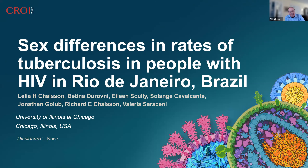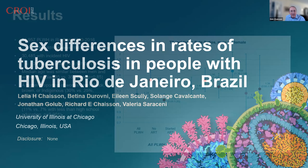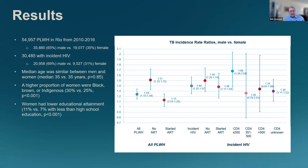My daughter Lillia, who was a PhD student here at the time, was interested in whether sex differences might extend to tuberculosis in people with HIV. With colleagues in Brazil she did this analysis, presented at CROI a month ago. She looked at HIV cases in Rio de Janeiro over a six-year period — about 55,000 cases, roughly 36,000 men and 19,000 women.